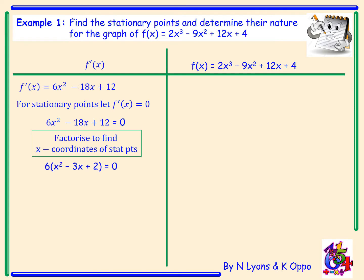Take out a common factor first. We'll be left with x squared minus 3x plus 2, which we'll then factorise to give (x minus 1) and (x minus 2). Setting each bracket equal to zero and rearranging gives x equals 1 or x equals 2. Therefore we have a stationary point when x is 1 and when x is 2.